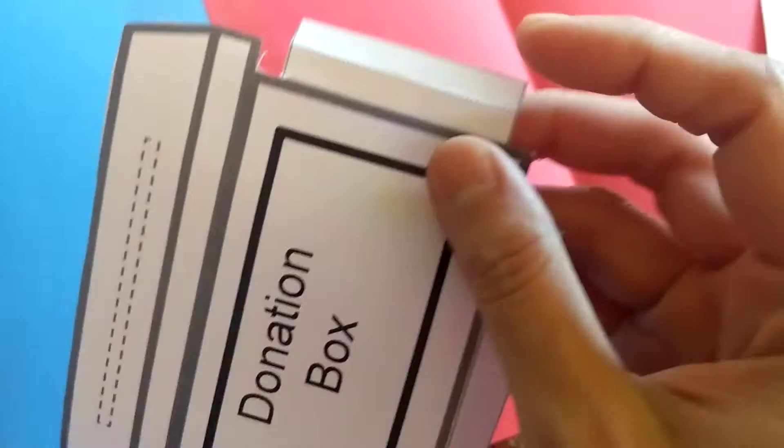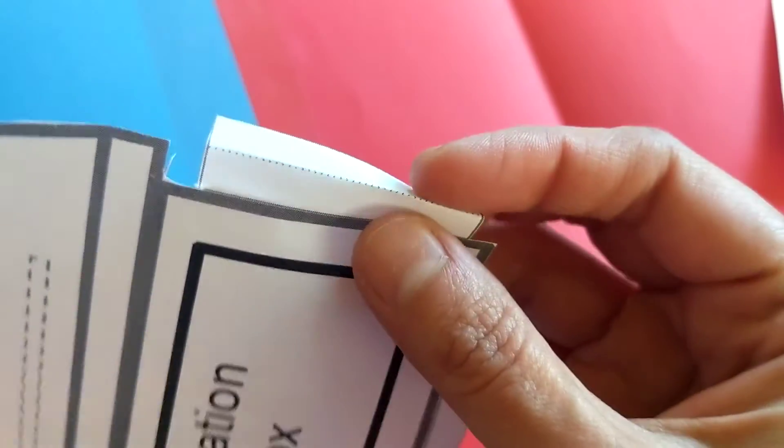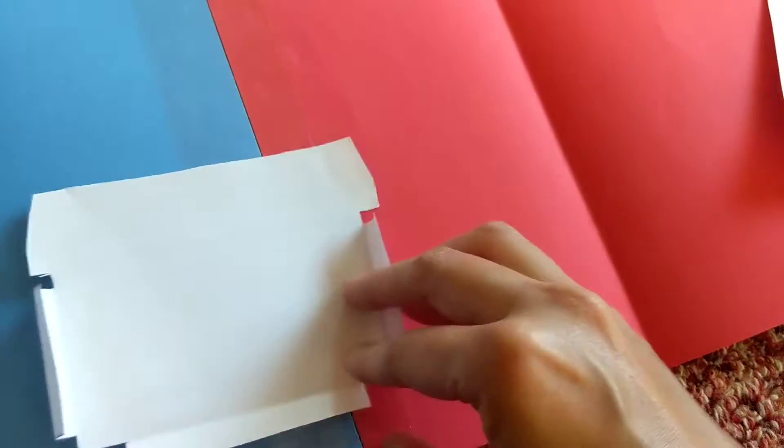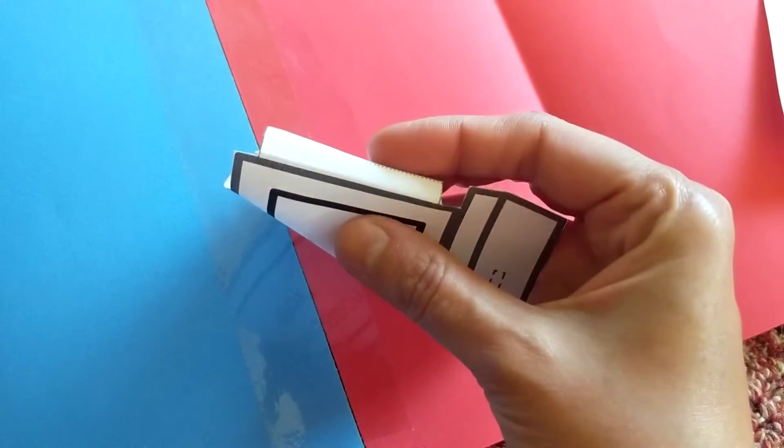On these dotted lines, you need to fold. So it will look like this. Fold this end as well, and then fold this end.